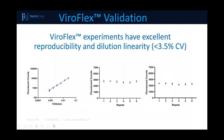The Flex assays themselves, when you prepare those chips, have excellent reproducibility and dilution linearity. Those spots are responsive to dilution in the same way as typical spots: dilute the sample, less binding on the spot, less fluorescent signal, less counting. Reproducibility over repeated preparations of functionalized chips is also very good.